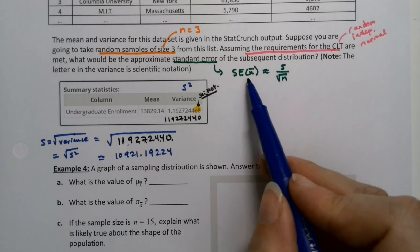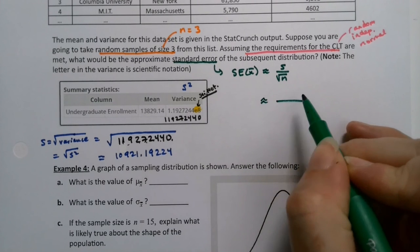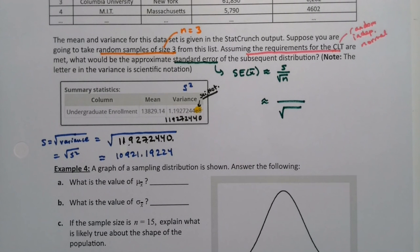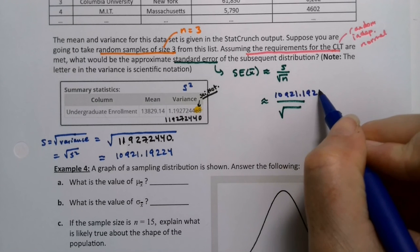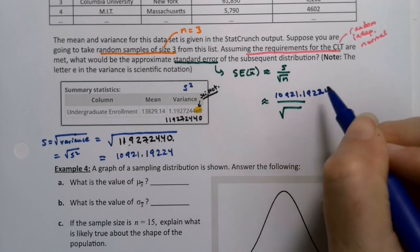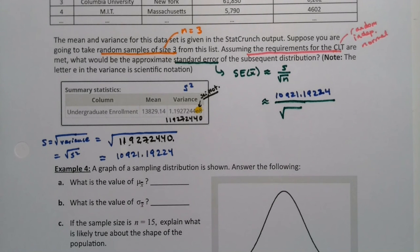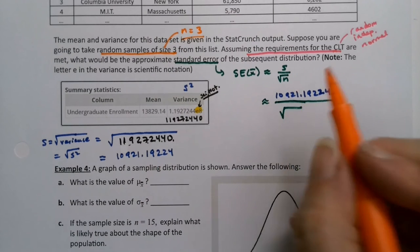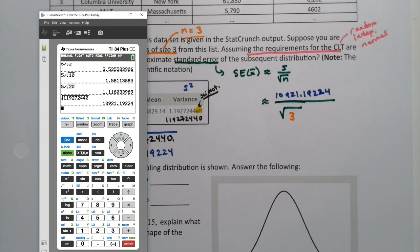And then I will use that in my formula. So when I want the standard error, I want s over the square root of n. So that would be s I just found was 10,921.19224, and I will divide that by the square root of my sample size. And the sample size was given to us as three.